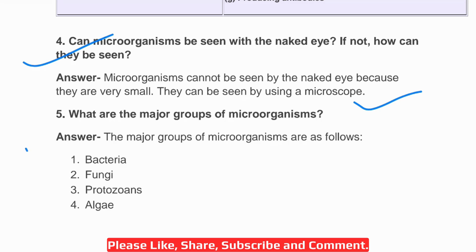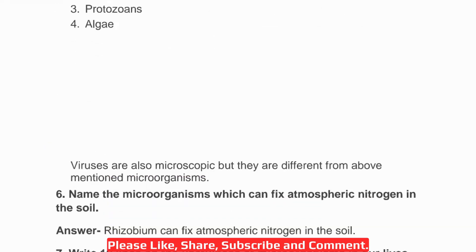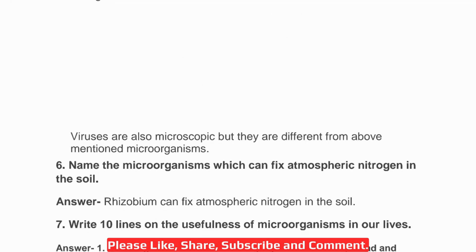Question five: what are the major groups of microorganisms? There are four major groups — bacteria, fungi, protozoan, and algae. Along with these, we also include viruses. Viruses are also microscopic but they are different from the above-mentioned microorganisms.